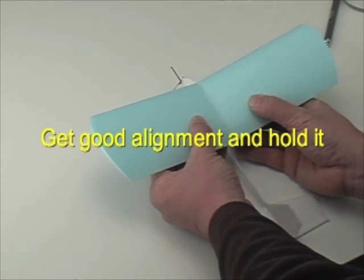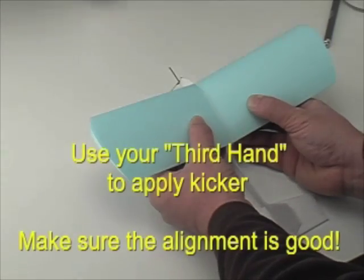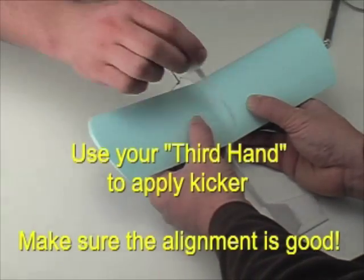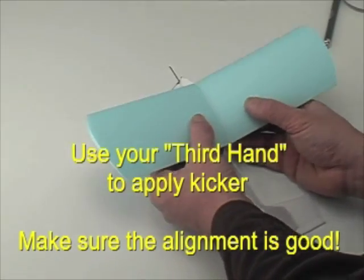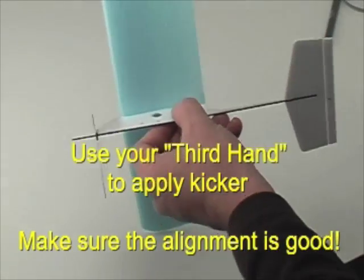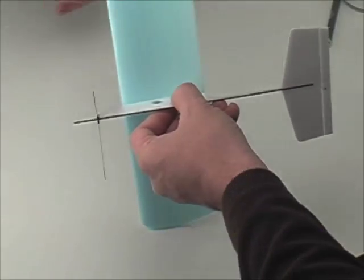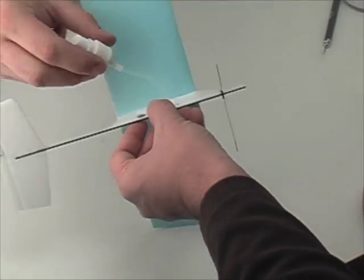Once you have good alignment, get your third hand out which is usually a helper and have them apply some accelerator kicker to harden up the CA of the wing. Just make sure your alignment is good when you do this procedure.